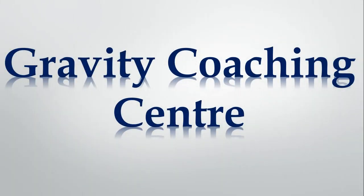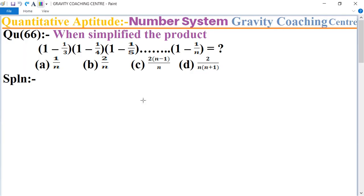Welcome to our channel Gravity Coaching Center. Quantitative aptitude, chapter Number System, question number 66: When simplified, the product (1 - 1/2)(1 - 1/3)(1 - 1/4)...(1 - 1/n) equals what?